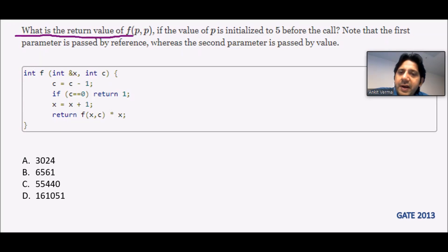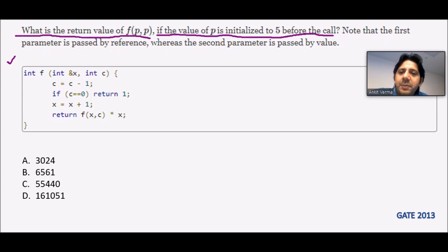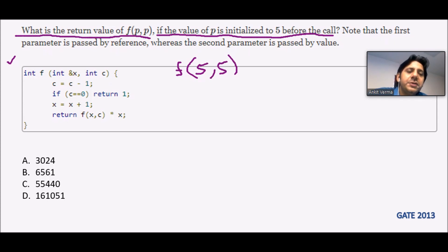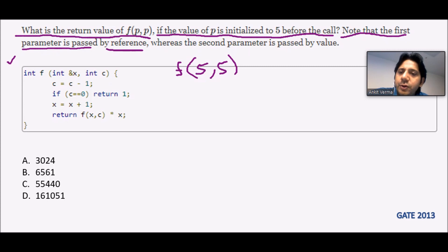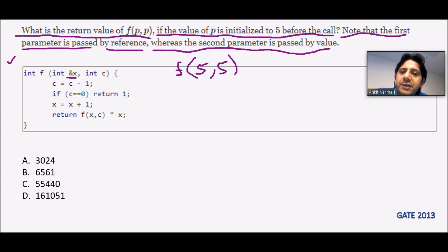What is the return value of f(p,p)? There is a function given and they are saying f(p,p) where the value of p is initialized to 5 before the call. So first they are going to call f(5,5). Note that the first parameter is passed by reference — you can see there is ampersand x — whereas the second parameter is passed by value, which is the normal parameter passing.